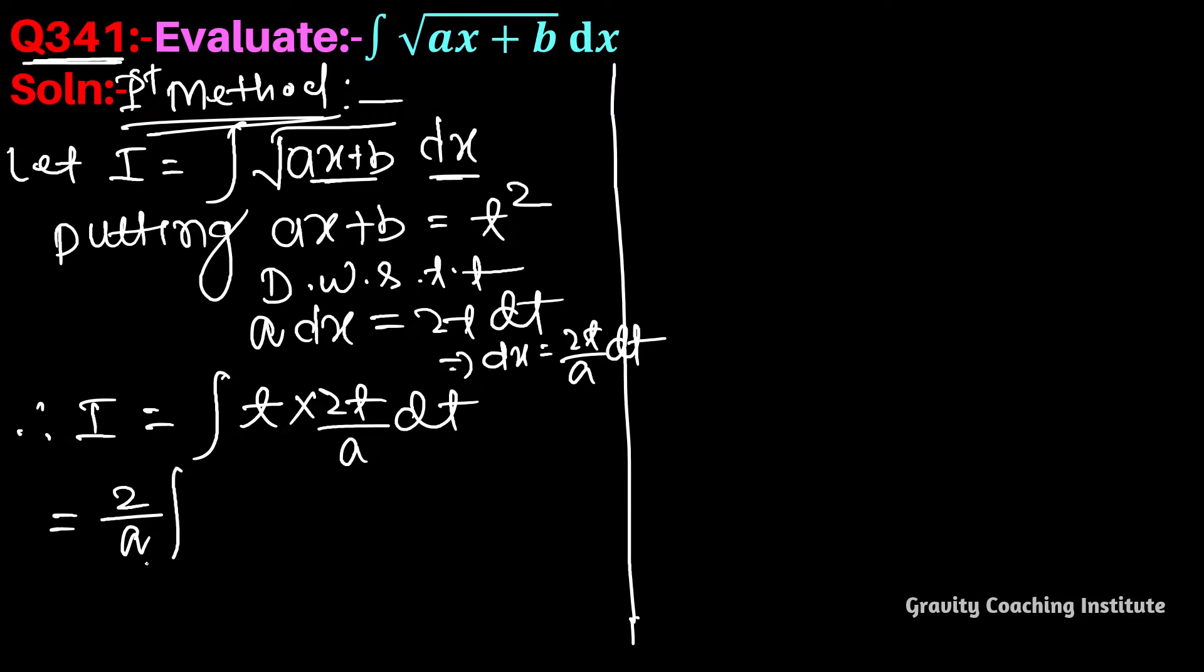2t/a is constant, so take it outside the integration. The integration of t² gives t³/3.